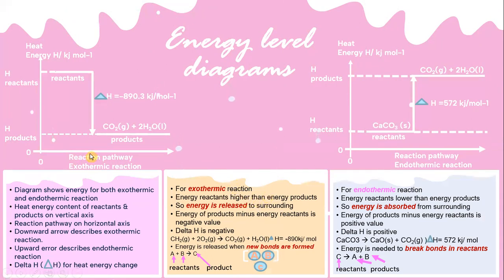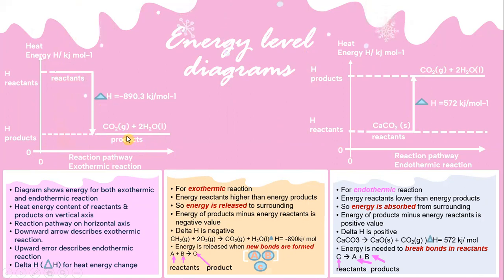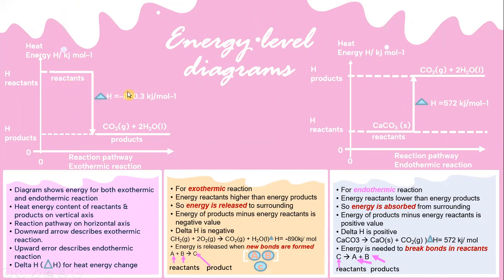Let's look into the exothermic reaction. During an exothermic reaction, the energy of the reactants is higher than the energy of the products. So energy is released to the surrounding. The energy of the product minus energy of the reactant gives a negative value. So delta H is negative for exothermic.